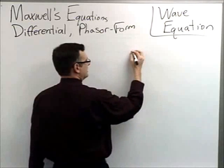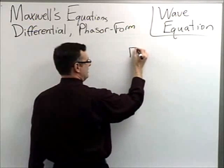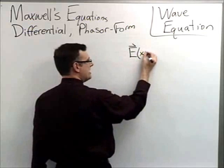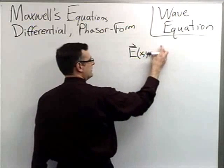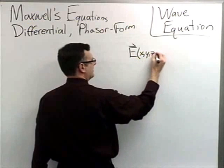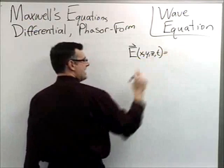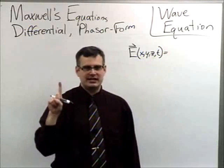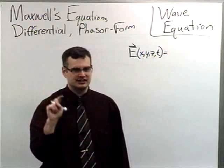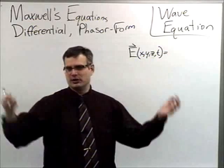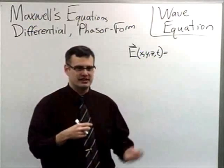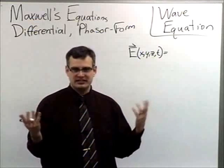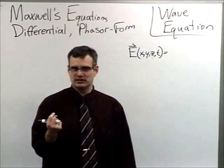In this case, we have things like an E-field vector, which will be a function of three-dimensional space and time. As is often the case in electrical engineering, we're just interested in time harmonic analysis — a sinusoid going from minus infinity to plus infinity — because a lot of radiation theory deals with things that look like sinusoids.